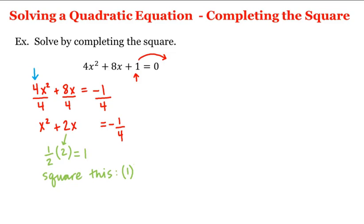And then we square this number. So we get 1 squared equals 1. And then we add this to both sides of the equation. So we'll have a plus 1 here and a plus 1 here.